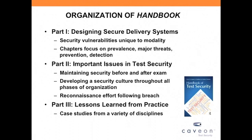In part two of the handbook, we focus on what we've called important issues in test security — a whole host of issues that cut across testing programs regardless of the testing modality or discipline. The focus in these chapters is on security throughout the entire testing process — before, during, and after the exam — and developing a culture of testing security throughout all phases of testing organizations. There is also a heavy focus on what to do when you find yourself in an unfortunate situation with a security breach, dealing with data forensics, legal issues, and the investigative piece. Part three is an in-depth look at lessons learned by colleagues, with a chapter for each of the four ATP disciplines.